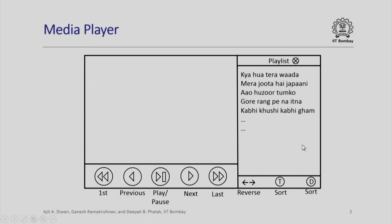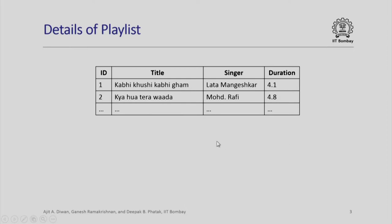Let us look at the actual operations that a user would like to perform using a media player. The playlist would have a song ID, a song title, the singer's name, and the duration. You have a list of such songs available, and from this list you choose certain songs to be inserted in the playlist and played.